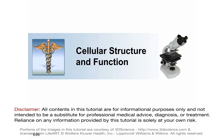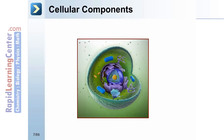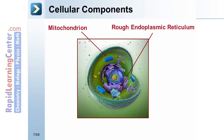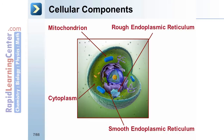Now, let's begin with a review of cellular structure and function. Eukaryotic cells have a number of organelles and other structures, including mitochondria, rough and smooth endoplasmic reticula, cytoplasm, nucleus, and Golgi apparatus. We will now discuss the structure and function of each component in turn, beginning with an overview of the cell cycle.